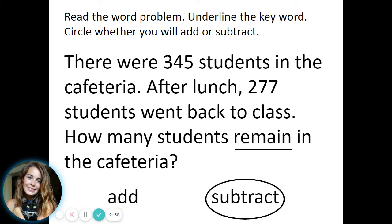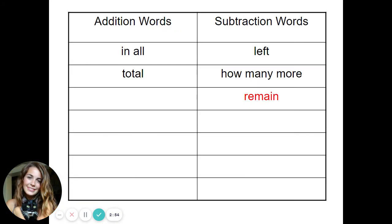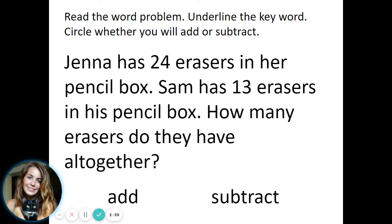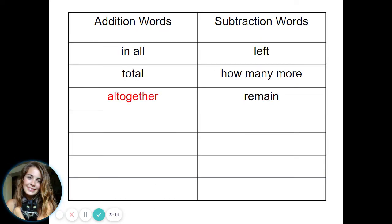Jenna has 24 erasers in her pencil box. Sam has 13 erasers in his pencil box. How many erasers do they have all together? All together means to add. That's an addition word.